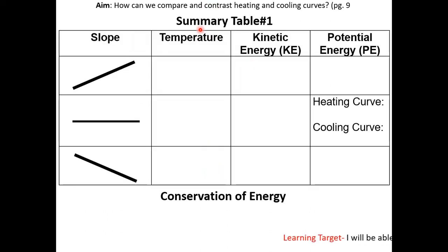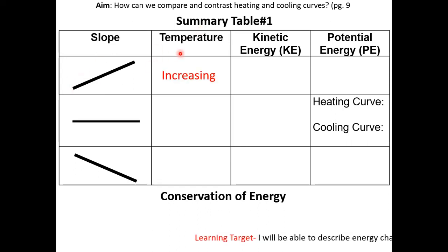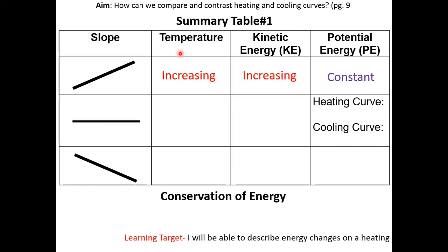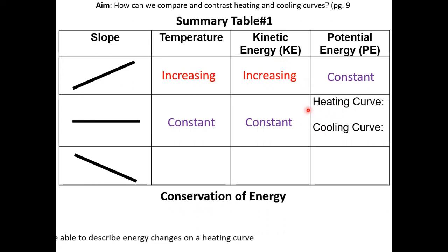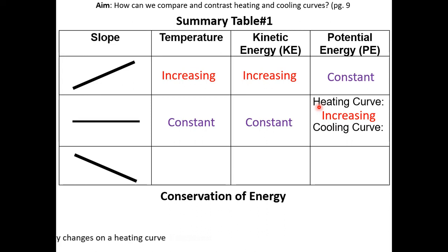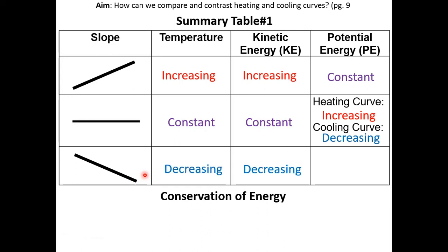Here's a summary table. If the slope is positive: temperature is increasing, kinetic energy is increasing, and potential energy is constant. On a flat slope: temperature is constant, kinetic energy is constant; for a heating curve potential energy is increasing, for a cooling curve potential energy is decreasing. If the slope is negative: temperature is decreasing, kinetic energy is decreasing, and potential energy is constant.